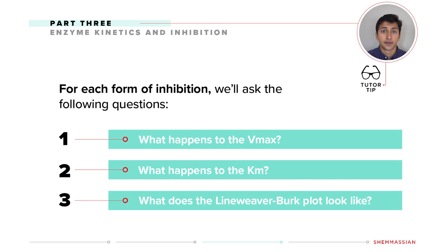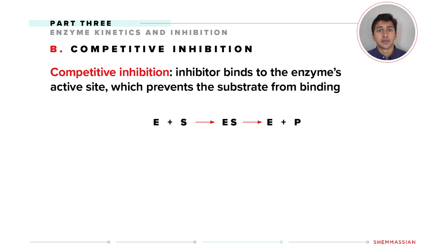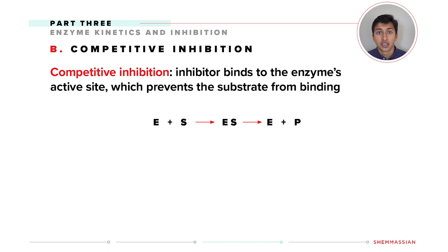Let's first look at competitive inhibition. Here, the inhibitor binds to the enzyme's active site, which prevents the substrate from binding. Let's use our reaction scheme to draw out what happens and to answer our three questions. The competitive inhibitor will bind to the enzyme's active site, so I'll draw an arrow to form an enzyme-inhibitor complex.